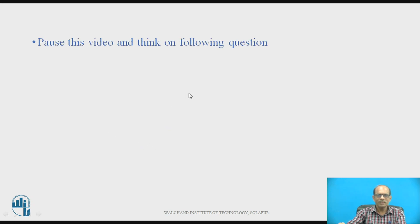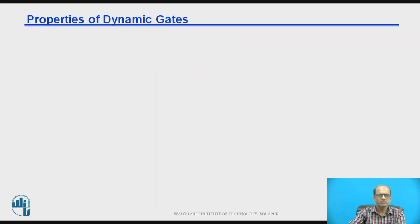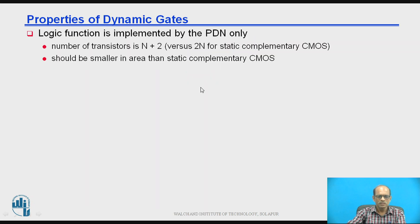What are the properties of the dynamic gates? Now properties of the dynamic gates. Now logic function is implemented by a pull-down network only and therefore number of transistors devices required are N plus 2 as compared to 2N for the static complementary CMOS. Hence, number of devices are reduced and therefore it should be smaller in area than the complementary CMOS.